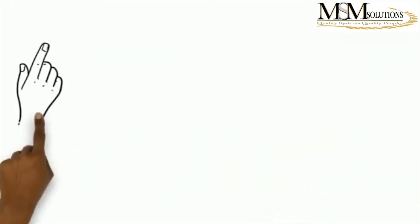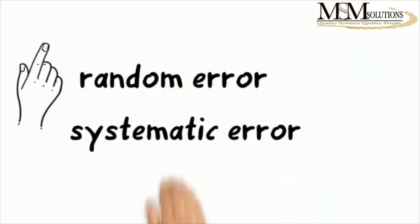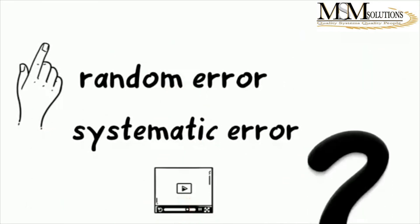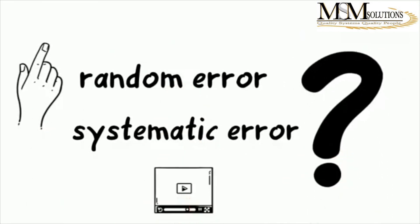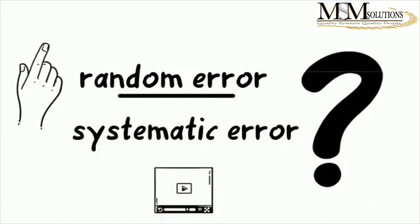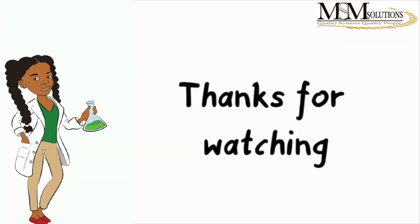Since we've touched on random and systematic errors, in our next video we'll define exactly what these are — what is a random error and what is a systematic error. See you in the next one. Thank you for watching.